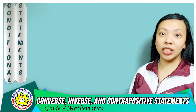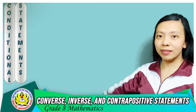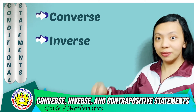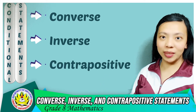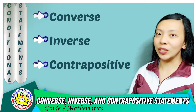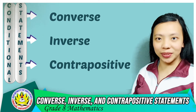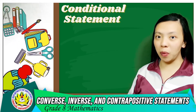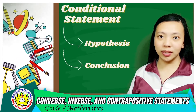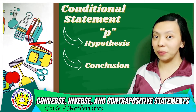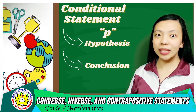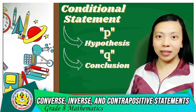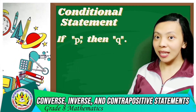Every conditional has three related statements: the converse, the inverse, and the contrapositive. Recall that a conditional statement is composed of two parts — the hypothesis and the conclusion. The hypothesis is denoted by the variable p, while the conclusion is denoted by the variable q. In symbols, a conditional statement is written in the form: if p, then q.